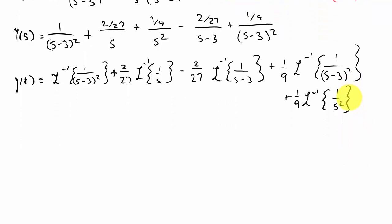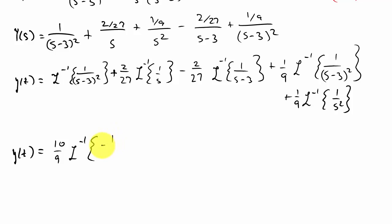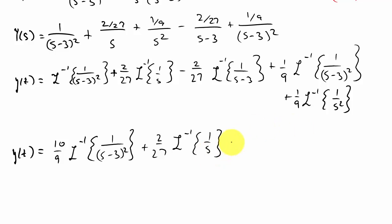Now y(t) equals the inverse Laplace transforms of all these terms. I have the inverse Laplace of 1/(s minus 3)² plus (2/27) times inverse Laplace of 1/s, plus (1/9) times inverse Laplace of 1/s², minus (2/27) times inverse Laplace of 1/(s minus 3), plus (1/9) times inverse Laplace of 1/(s minus 3)². I can combine the first and last terms: that gives 10/9 times inverse Laplace of 1/(s minus 3)².